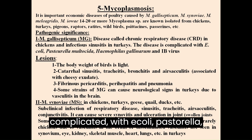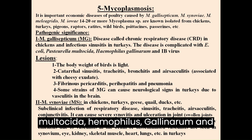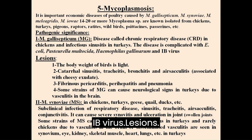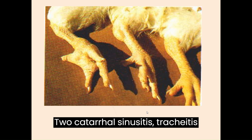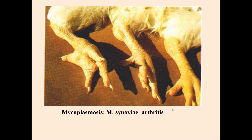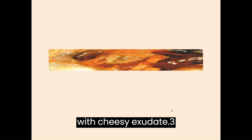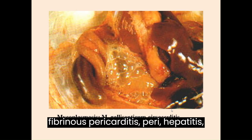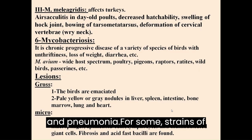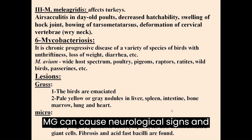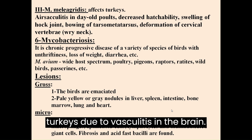CRD is complicated with E. coli, Pasteurella multocida, Haemophilus gallinarum and IB virus. Lesions: 1. Body weight of birds is light. 2. Catarrhal sinusitis, tracheitis, bronchitis and airsacculitis associated with cheesy exudate. 3. Fibrinous pericarditis, perihepatitis and pneumonia. 4. Some strains of MG can cause neurological signs in turkeys due to vasculitis in the brain.